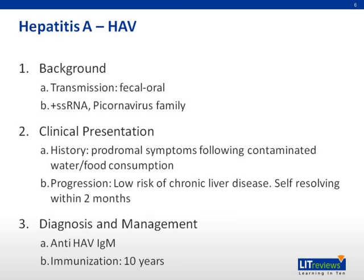First, let's start with hepatitis A. The virus is transmitted fecal-orally, and it is a positive single-stranded RNA virus of the picornavirus family. Patients typically present with prodromal symptoms such as myalgia, arthralgia, fever, anorexia, and diarrhea, two to four weeks after consumption of contaminated food or water.